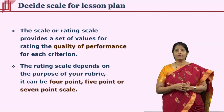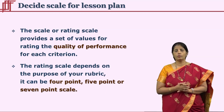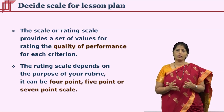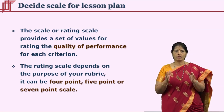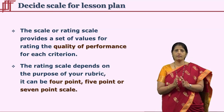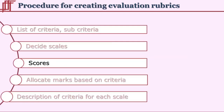For an entire rubric, we need to set a consistent scale. This scale could be a three-point, four-point, or five-point scale. It is recommended not to go below three or above five points, because within that range we can measure performance correctly. A longer scale makes it difficult to assess performance as differences between subsequent levels become very small. The scale could be 'excellent, good, average' or 'excellent, proficient, adequate, limited' — the words used will differ depending on the product being assessed.